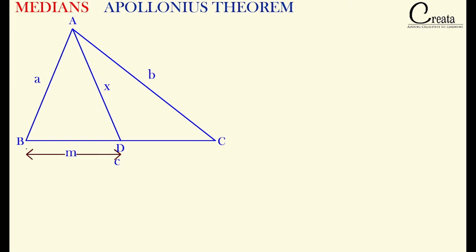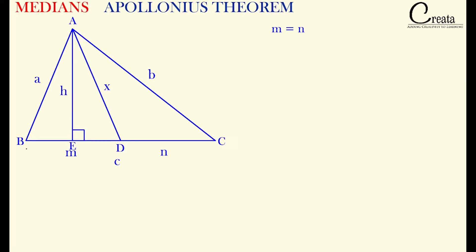Let's take BD as m and DC as n. Since BD = DC, m equals n. Further, let's draw a perpendicular from vertex A to side BC and denote this perpendicular as h — this is the height of the triangle. Let's take ED as y, then BE will be m minus y, since BD = m, so this complete length is m, making the remaining part m minus y.